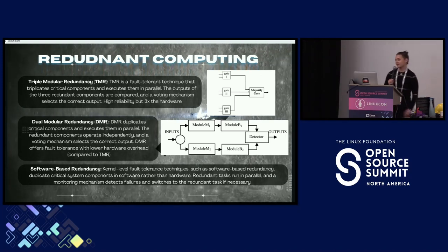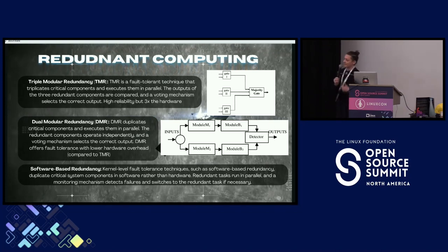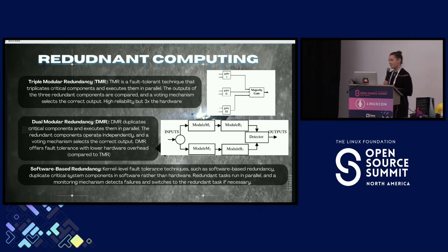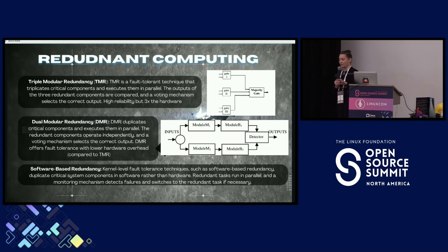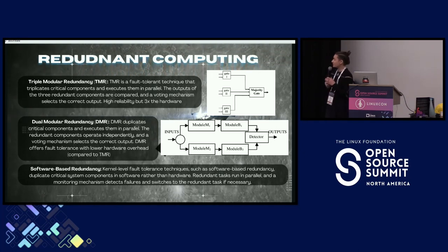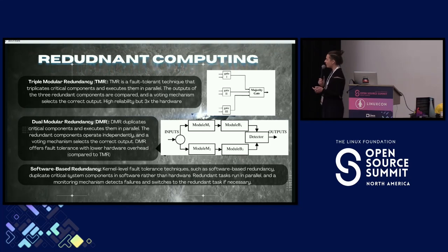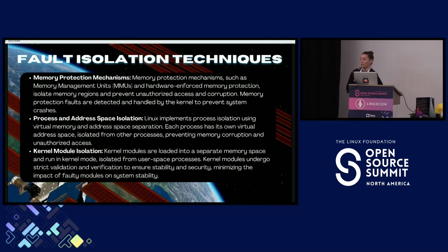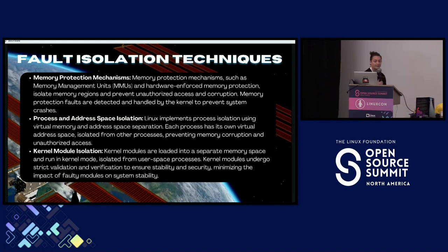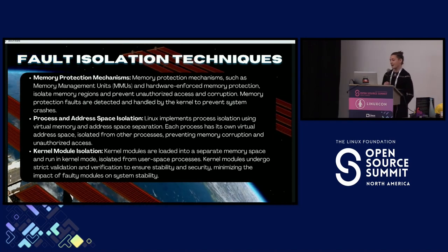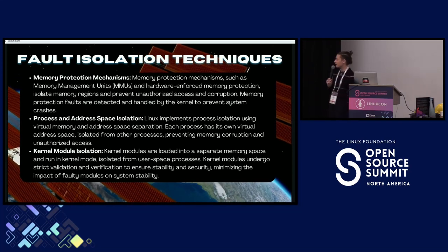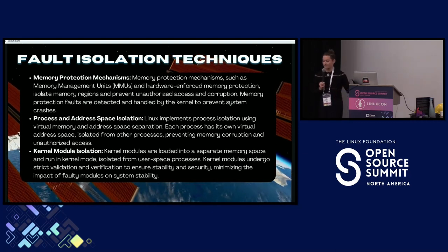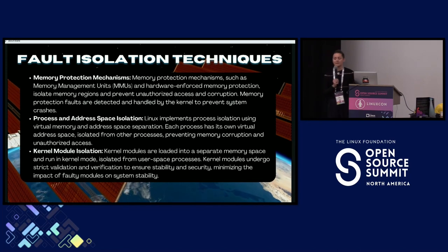I'm giving you some basic and older examples because we're covering mostly the history of what we've learned. What we've learned in the history and future of redundant computing is just getting better about putting redundancies in with less hardware — moving to solutions. We're much more likely to be using DMR over TMR now, but software redundancy systems are developing as well. We're being very careful about developing fault isolation techniques, memory protection mechanisms, and module kernel isolation — not so much for cybersecurity, but to protect against faults and physical compromises.